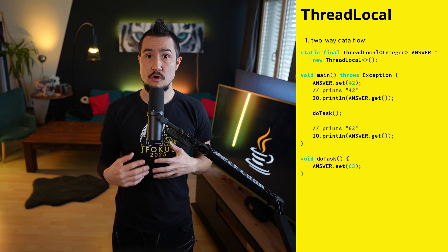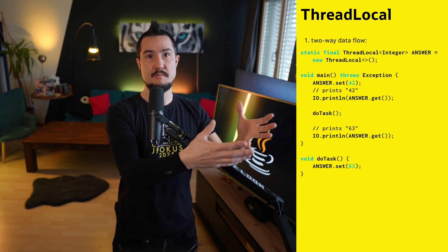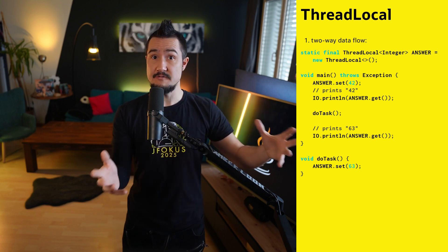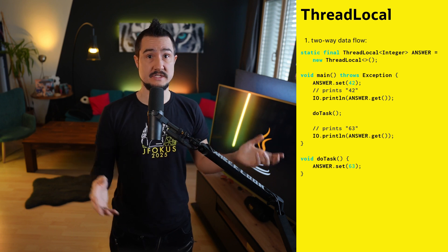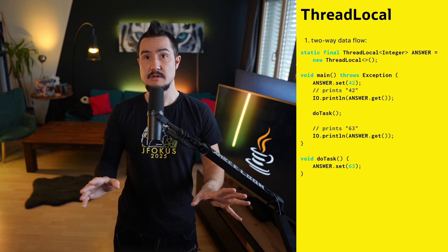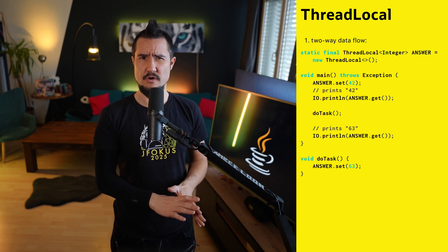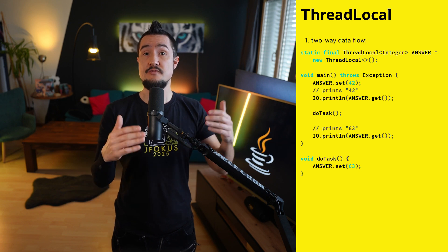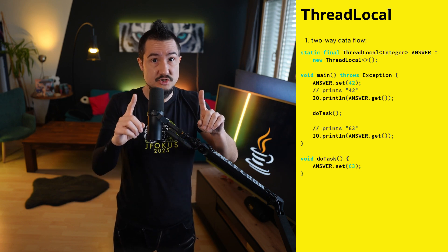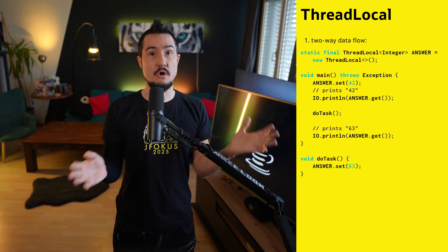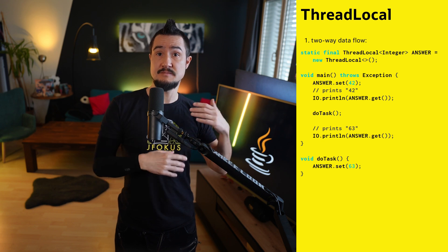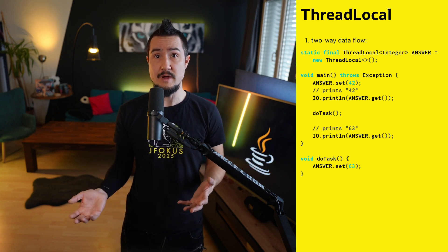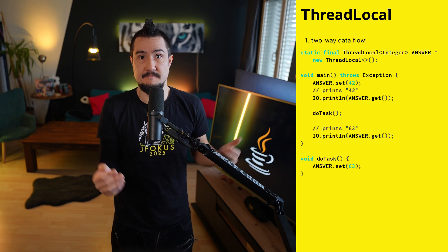First, all code with access to the thread local can both read and write data, which allows for complex data flows between callers and callees. To keep code readable, that's best avoided — and indeed this isn't frequently used. Yet when reading thread-local code, you can never be sure and need to check carefully. Scope values make this much easier, as there's no question whether data flows both ways. No, it can't.